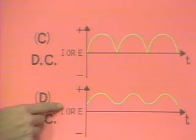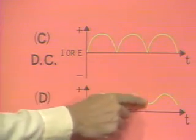Waveform D is also a DC waveform that is constantly changing amplitude.